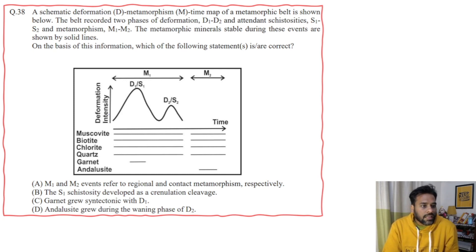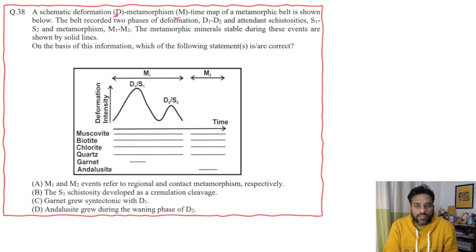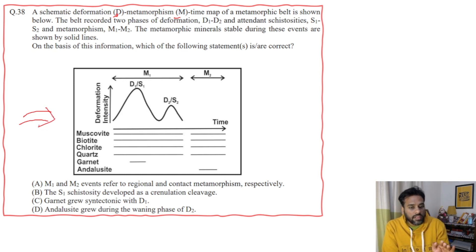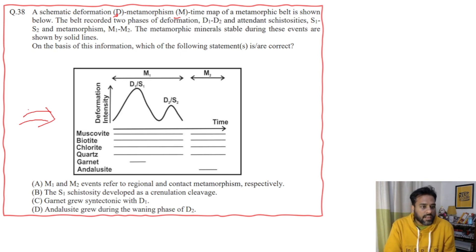The question says: a schematic deformation represented by D and metamorphism M, time map of metamorphic belt is shown below. Here is this map — or you can say it's like a graph — that depicts the deformation and metamorphism happening in a regional area through a belt, or through time, in a regional metamorphic belt.